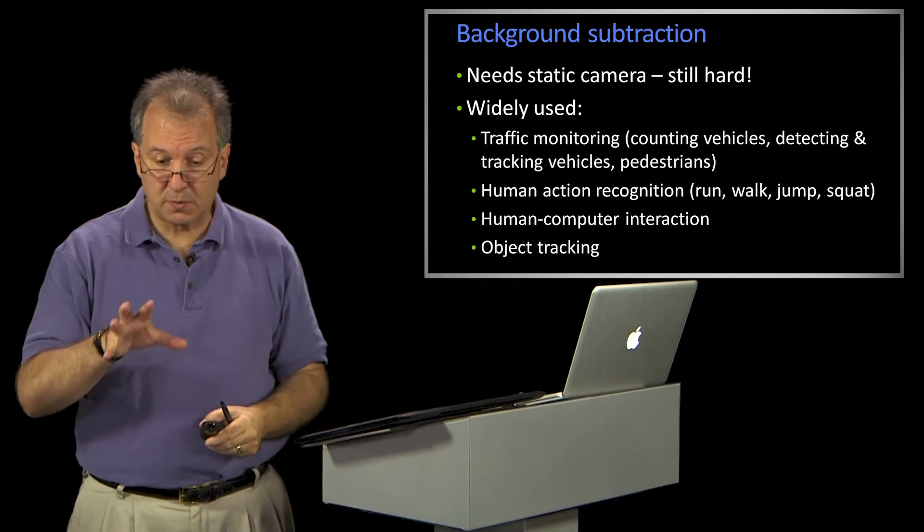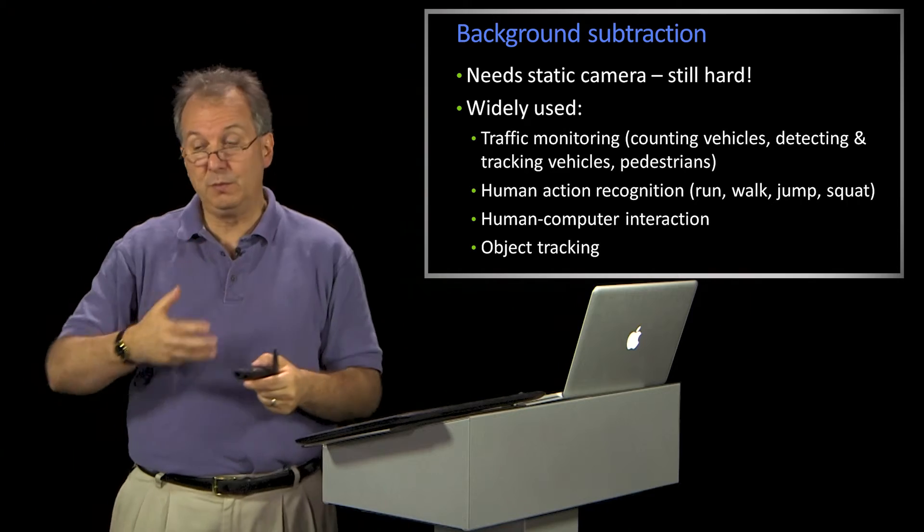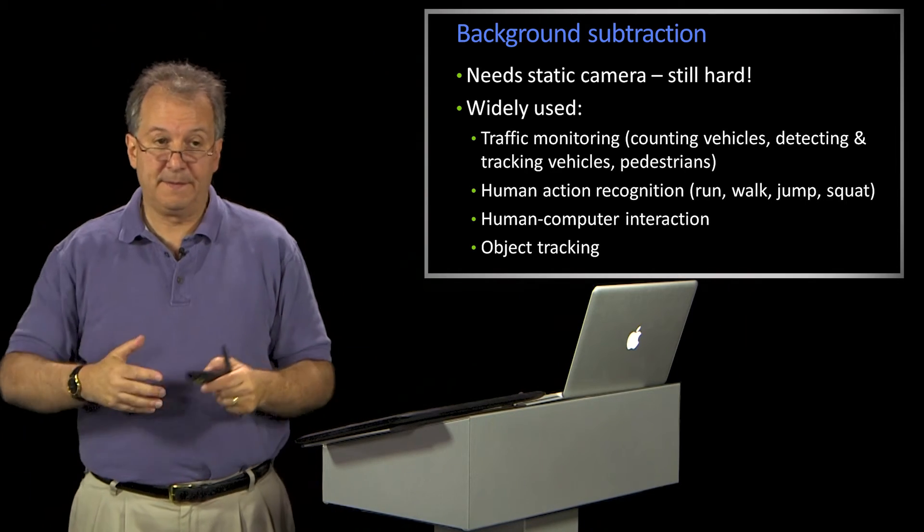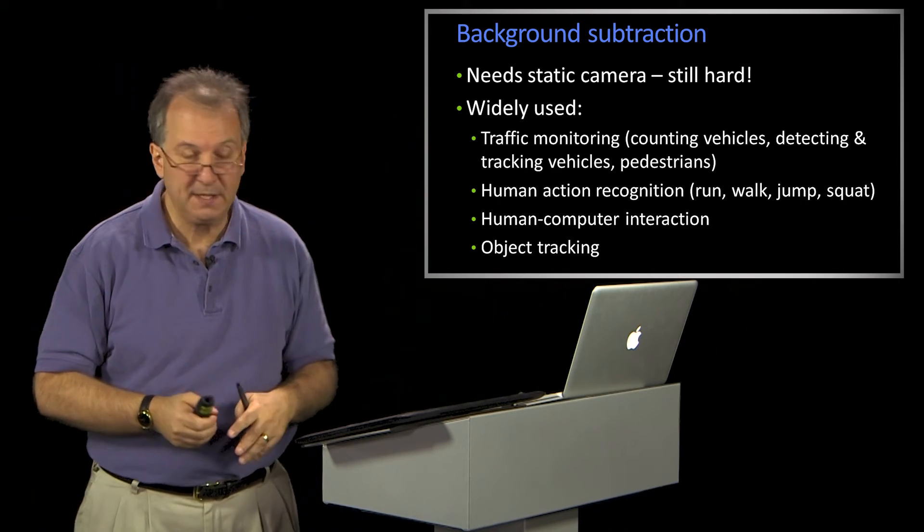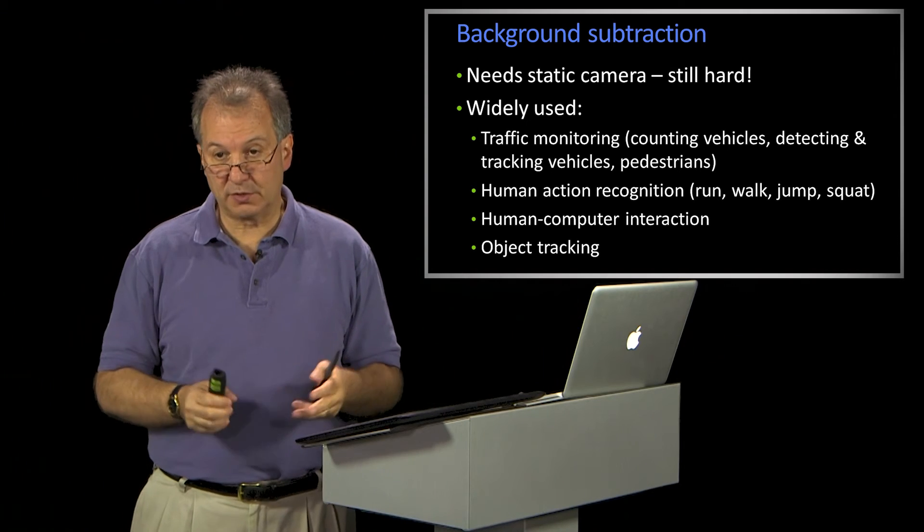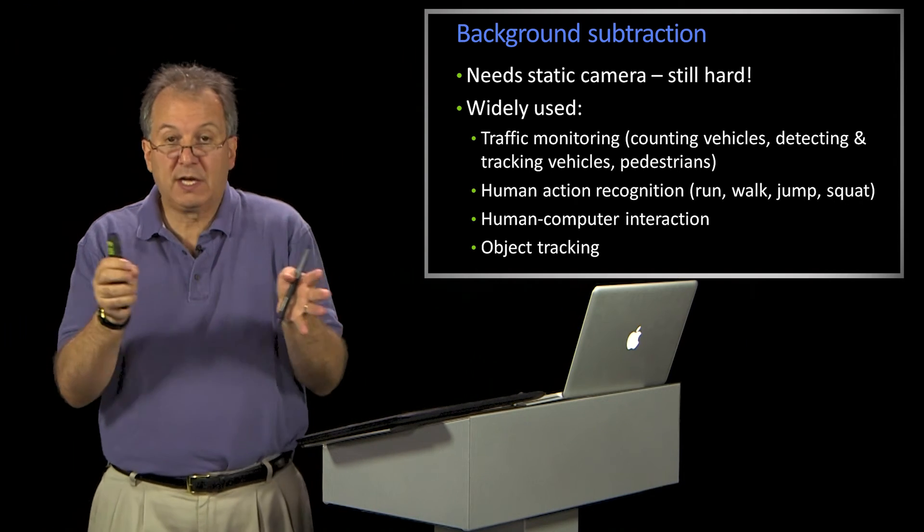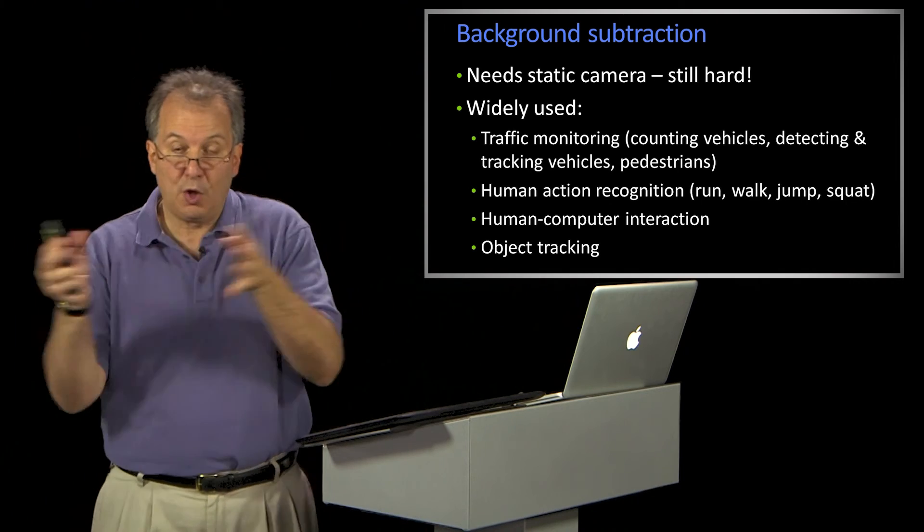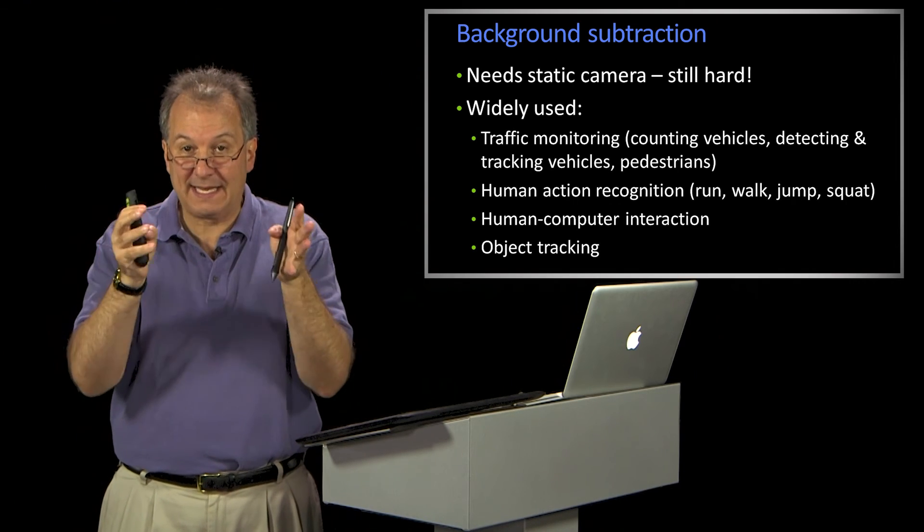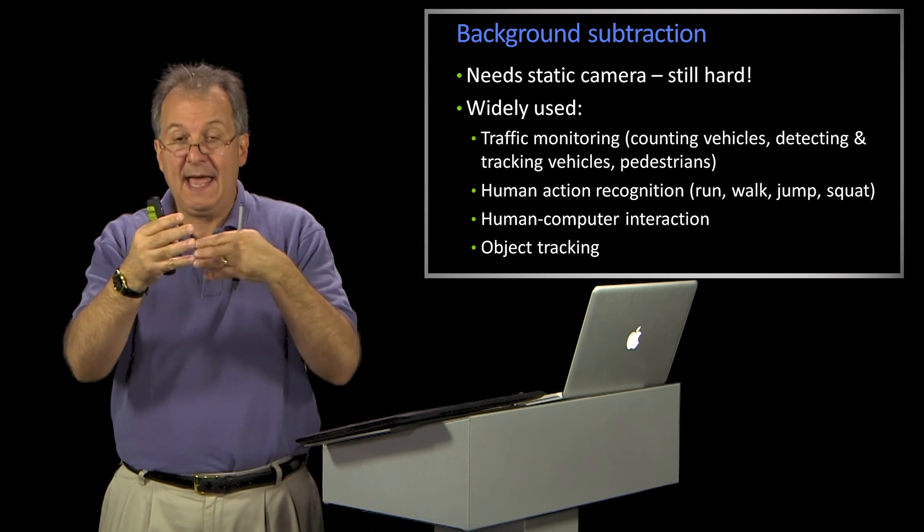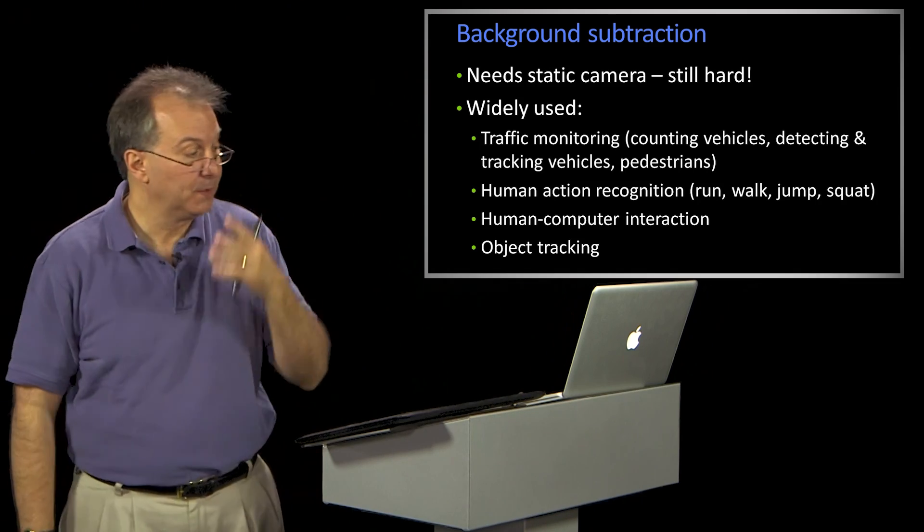Human computer interaction, so people will build systems where humans interact with a big display and to pull the humans out from the background, they have to remove the background somehow, and object tracking in general. So sometimes what you'll do is you'll compensate for the motion of the camera. You'll move the whole image back, as if you had the camera stationary, and then you do background subtraction on that.